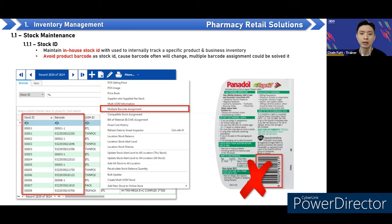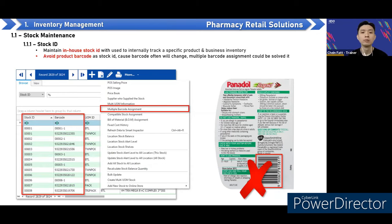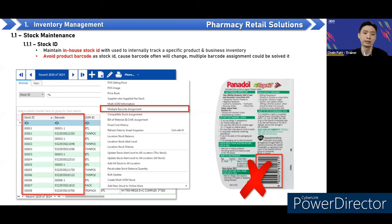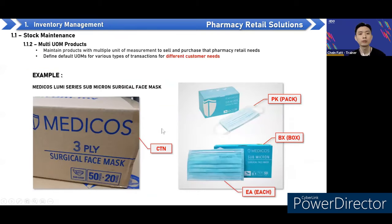Every time they get a new barcode, they can maintain it under multiple barcode assignment, and the system will track it as the same item if the same stock ID is used. Our system allows more than one barcode per item. I suggest that when they get a new barcode, they maintain the original stock ID, and put the old barcode under the multiple barcode assignment.